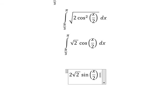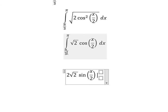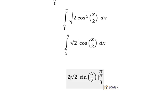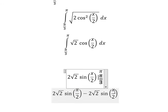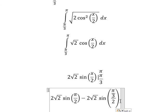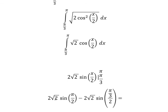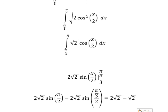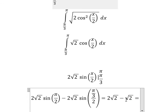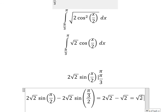We put in the bounds and we have the final answer. I will put this value here and this one here. So we have 2 times the square root of 2 minus the square root of 2. This gives us the square root of number 2. And this is the final answer.